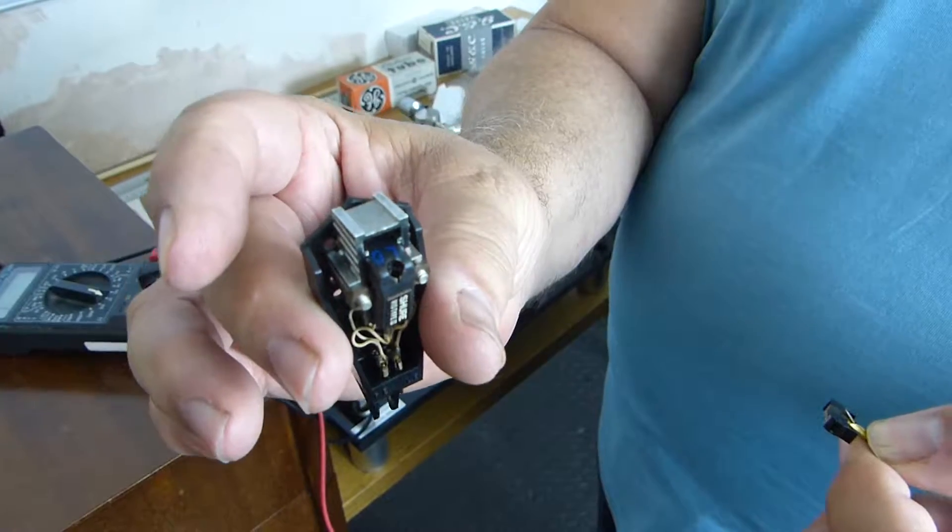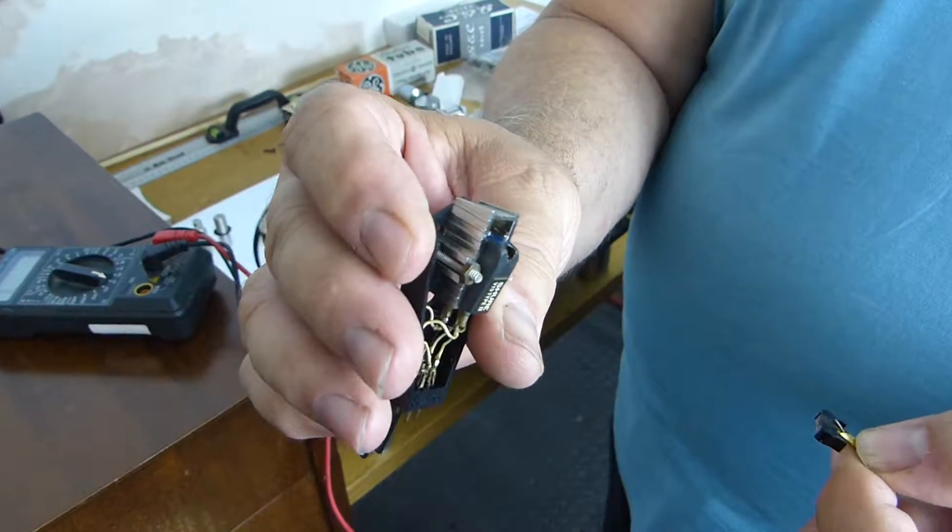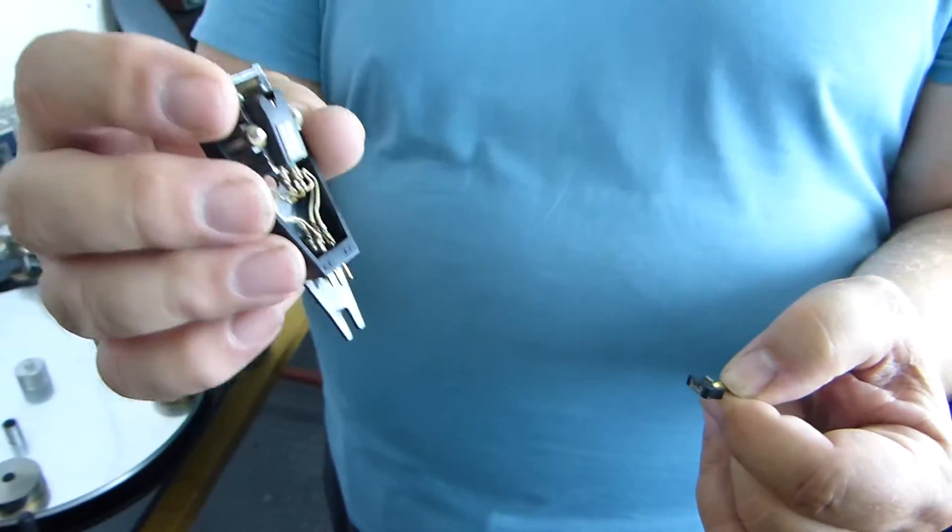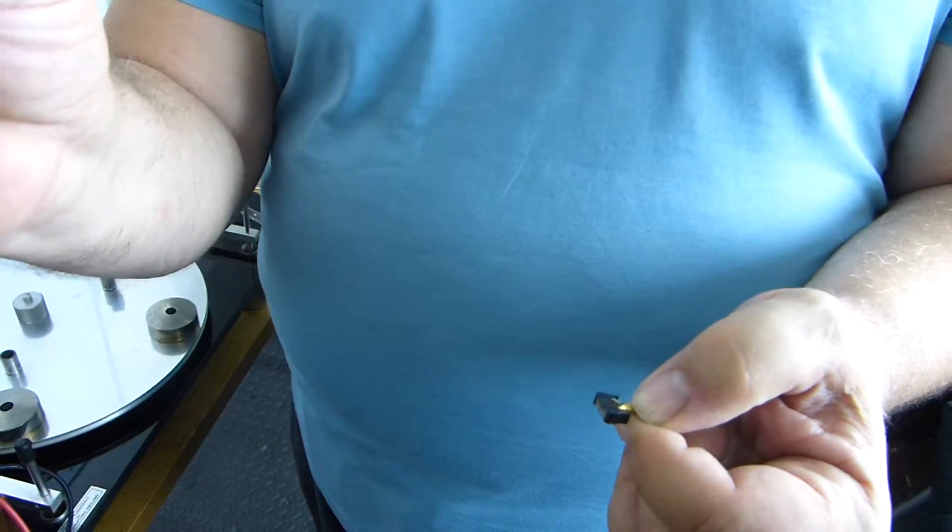That's just coils of wire around the magnets. So is it a moving coil? No, it's not a moving coil. In a moving coil, the coil would be moving. This is not a moving coil.